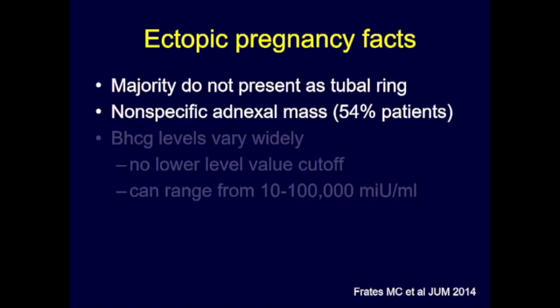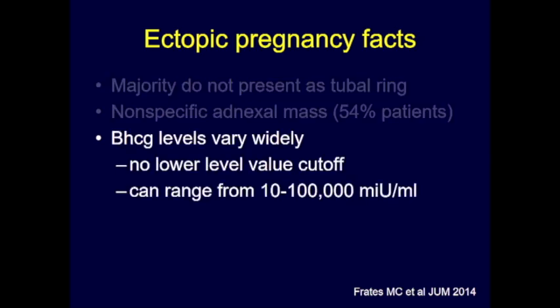The majority of ectopic pregnancies do not present as that classic tubal ring. A retrospective study showed that 54% of ectopic pregnancies presented as a nonspecific adnexal mass, separate from the ovary. Regarding beta-HCG: there is no lower-level value cutoff that will exclude ectopic pregnancy — you can have a beta of 10 and still have a significant ruptured ectopic.